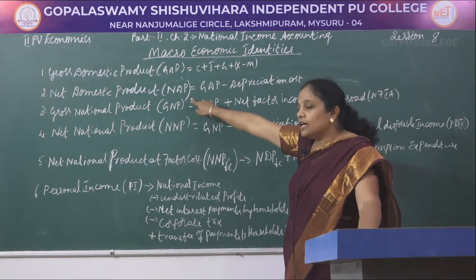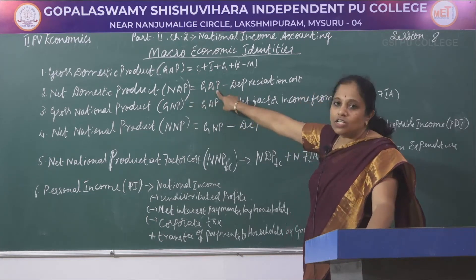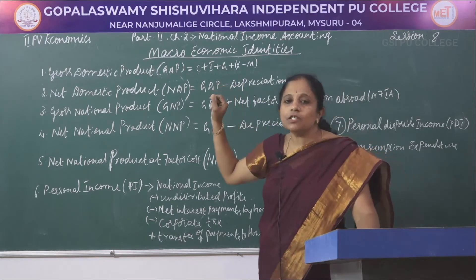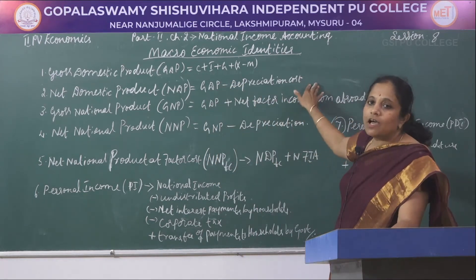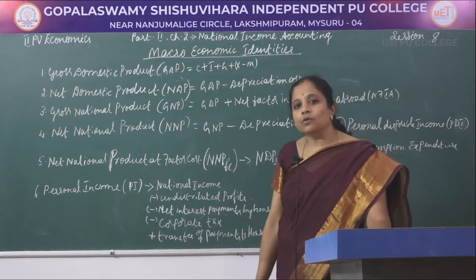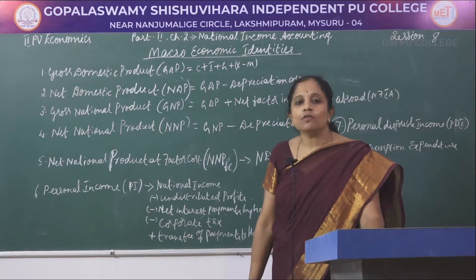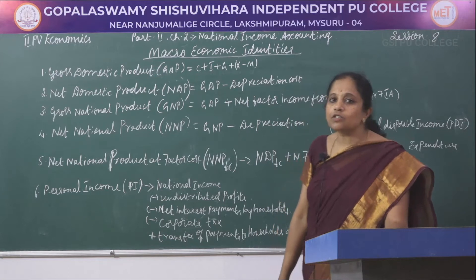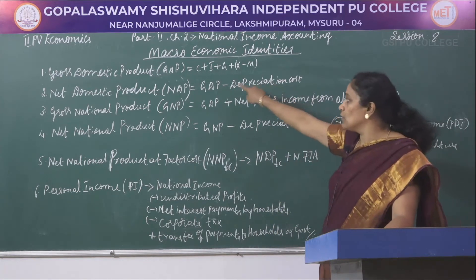The second identity is net domestic product, which is GDP minus depreciation cost. Depreciation allowances and costs are kept every year for capital goods, as these capital goods undergo lots of wear and tear over time and should be deducted from GDP.